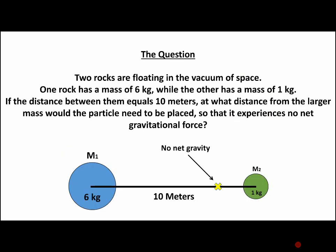And the question is: two rocks are floating in the vacuum of space. One rock has a mass of 6 kilograms, while the other has a mass of 1 kilogram. If the distance between them equals 10 meters, at what distance from the larger mass would the particle need to be placed so that it experiences no net gravitational force? So the key there is to read the question. It does say at what distance from the larger mass would the particle need to be placed. So bear that in mind when we try to solve this.